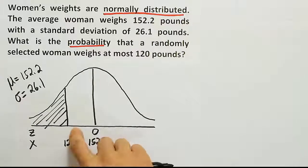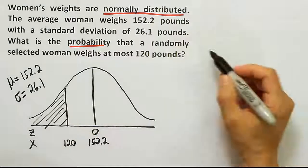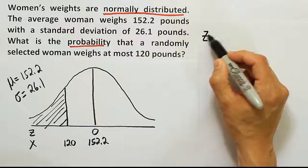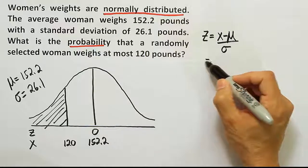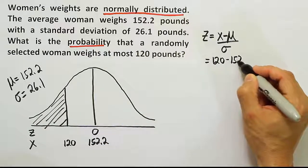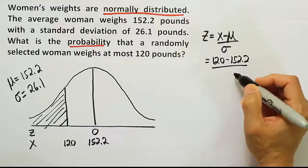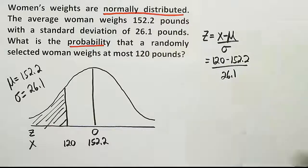Normally I would go look up 120, but I can't look up 120 on our z-chart. I've got to first convert it into a z-score. Remember, z equals x minus the mean over sigma. That means z is 120 minus the mean of 152.2 divided by the standard deviation of 26.1. Let's see what that gives us.